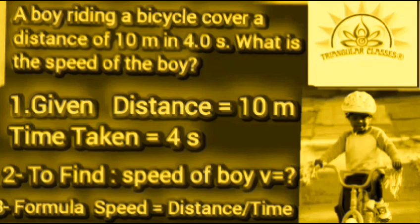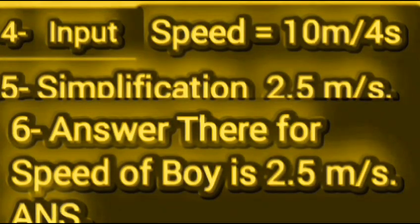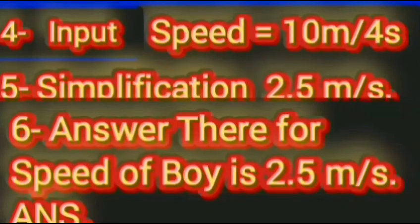Step 3: Use suitable formula. Speed equals distance divided by time. Step 4: Input — keep the input values in the formula. Step 5: Simplification — simplify to get 2.5 meters per second. Step 6: Answer — therefore, the speed of the boy is 2.5 meters per second.